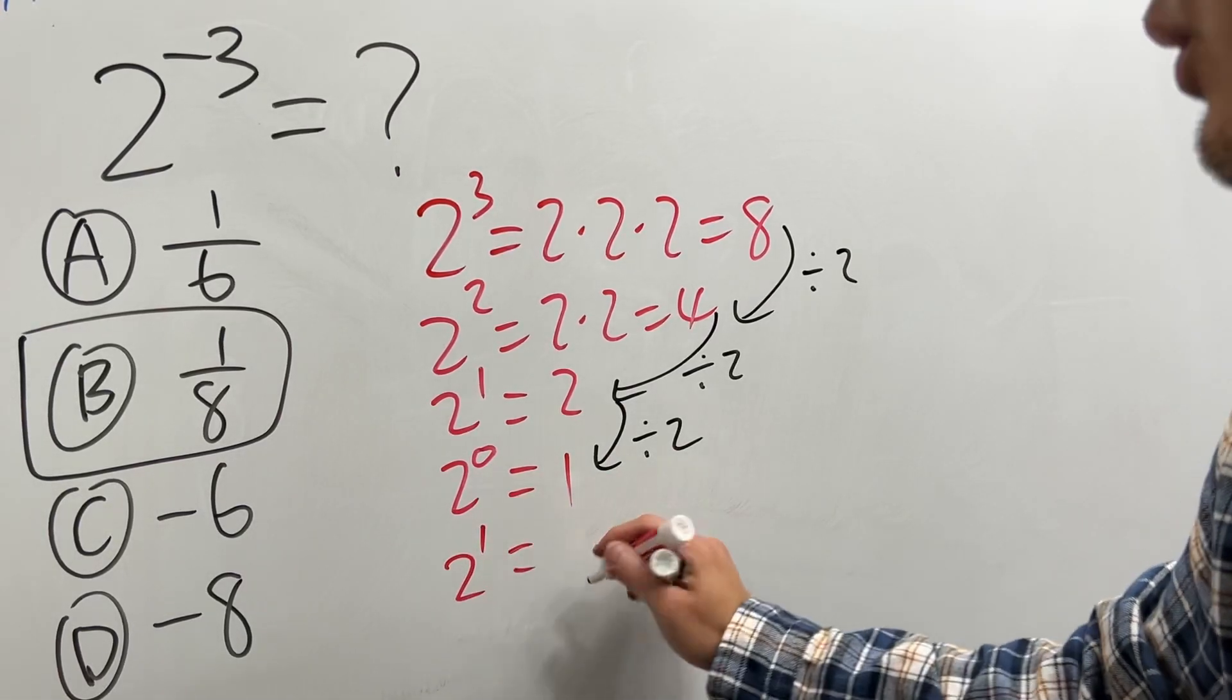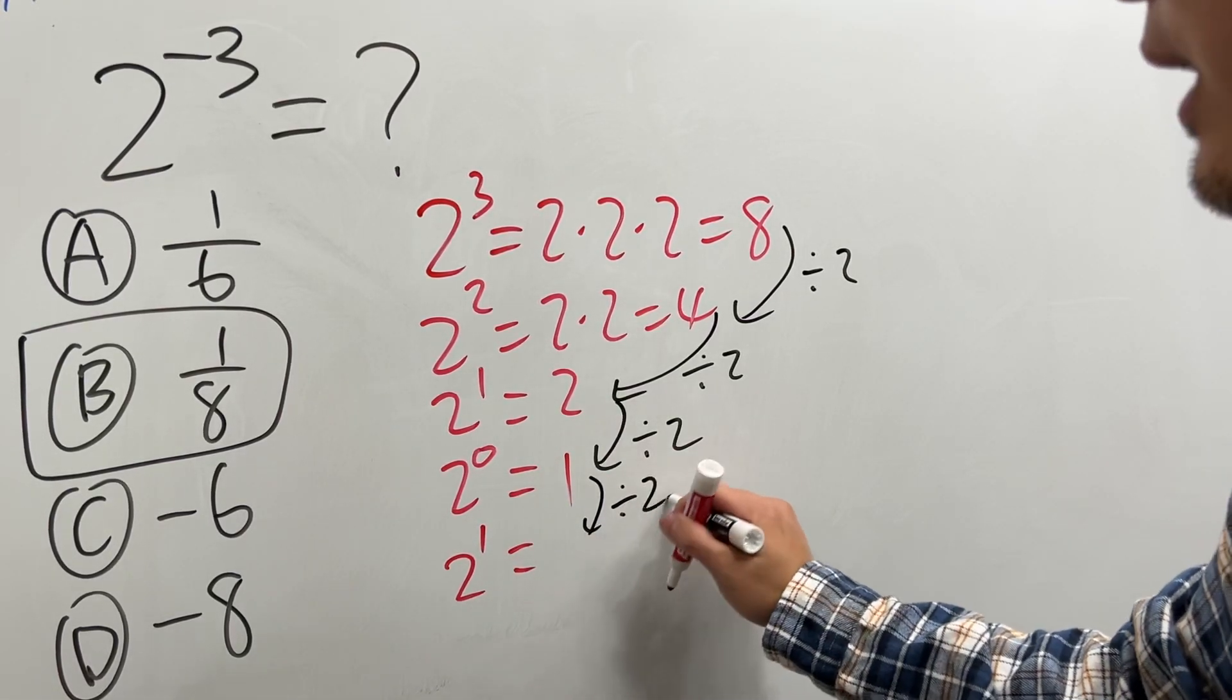Next, you have 2 to the negative 1st power. You divide this by 2 again, you will get 1 over 2.